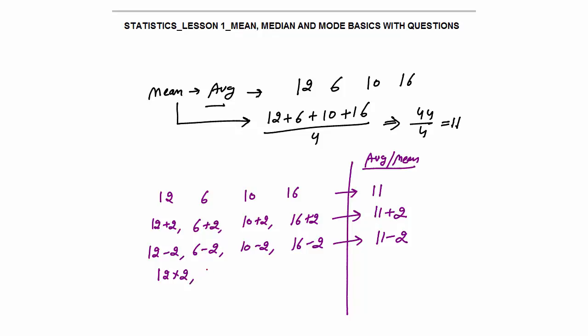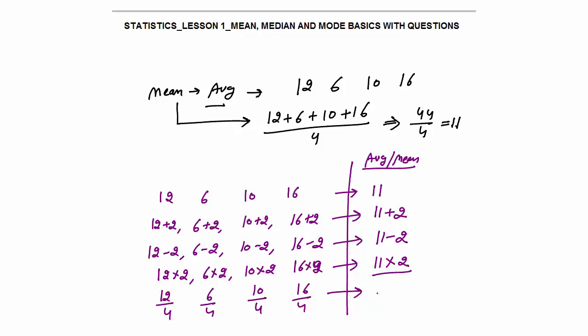Same with multiplication. If you multiply each number by the same constant — say I multiply by 2 — then the average will also be multiplied by 2. Whatever change you make to each observation, either in terms of addition or multiplication, the same change will happen in the average. The average will now be 22. Same way, if each observation is divided by the same constant, your average will also be divided by that same number. So the average will be 11 divided by 4 — wait, 44 divided by 4.